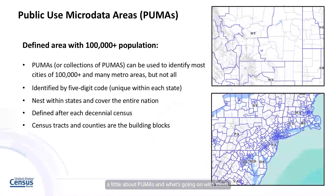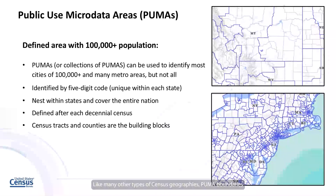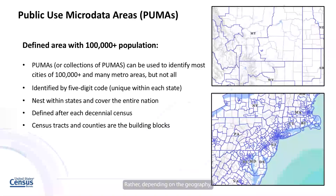First, let's talk a little about PUMAs and what's going on with them. PUMAs are non-overlapping statistical geographic areas that partition each state or equivalent entity into geographic areas containing no fewer than 100,000 people each. They cover the entirety of the US and Puerto Rico. Like many other types of census geographies, PUMA boundaries can potentially change every 10 years with each decennial census. However, these changes are not necessarily implemented right away in the American Community Survey or ACS. Rather, depending on the geography, they are implemented on a staggered schedule with some geography changes incorporated into the data sooner than others.